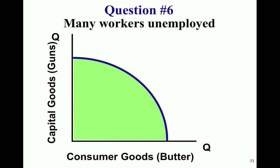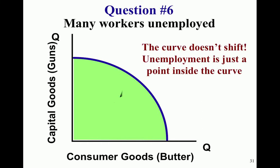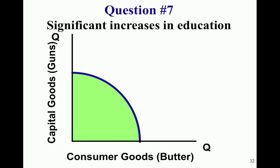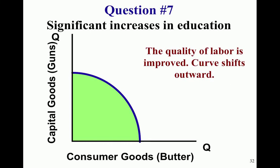Question six — many workers are unemployed. Remember, unemployment isn't a move in the curve; it's a point inside the curve. Question seven — significant increases in education represent the growth of human capital, which is an increased quality of a resource, and the whole curve shifts out.